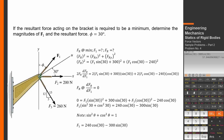To find FR, substitute F1 (stored as A) into the equation: FR equals the square root of (A sine 30 + 300)² plus (A cosine 30 − 240)². Therefore, F1 equals 57.8460 N and the magnitude of the resultant force FR equals 179.8076 N.